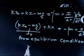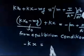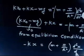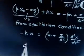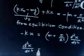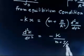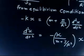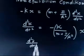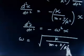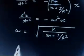After cancellation, we have: minus K·x equals (M + I/R²) times d²x/dt². Rearranging: d²x/dt² equals minus K divided by (M + I/R²) times x. This is of the form d²x/dt² equals minus omega² times x, so omega equals the square root of K divided by (M + I/R²). The time period is T equals 2π divided by omega.